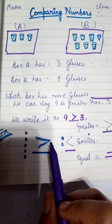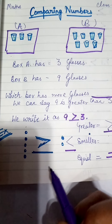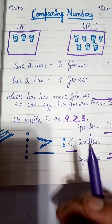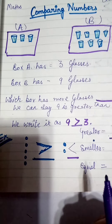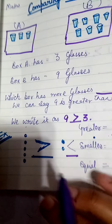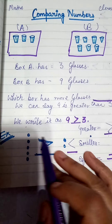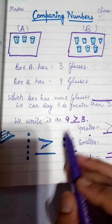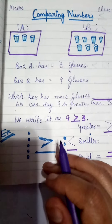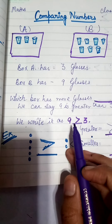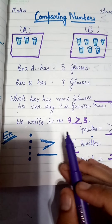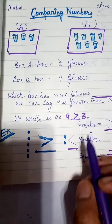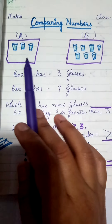For example, this is the alligator's mouth. The alligator only likes to eat the greater number. So according to the position of the greater number, just turn the face of the alligator to that side. So let's do some examples.